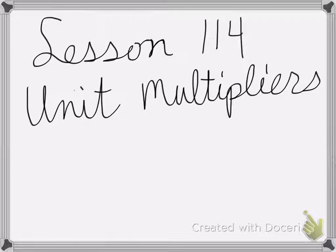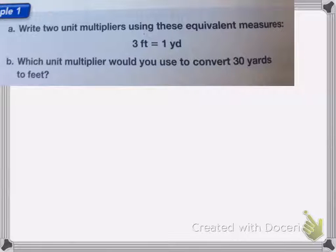All right, so lesson 114 is on unit multipliers. Here we have 3 feet equals 1 yard. I need to write two unit multipliers using these equivalent measures, and then which one would I use to convert 30 yards to feet?